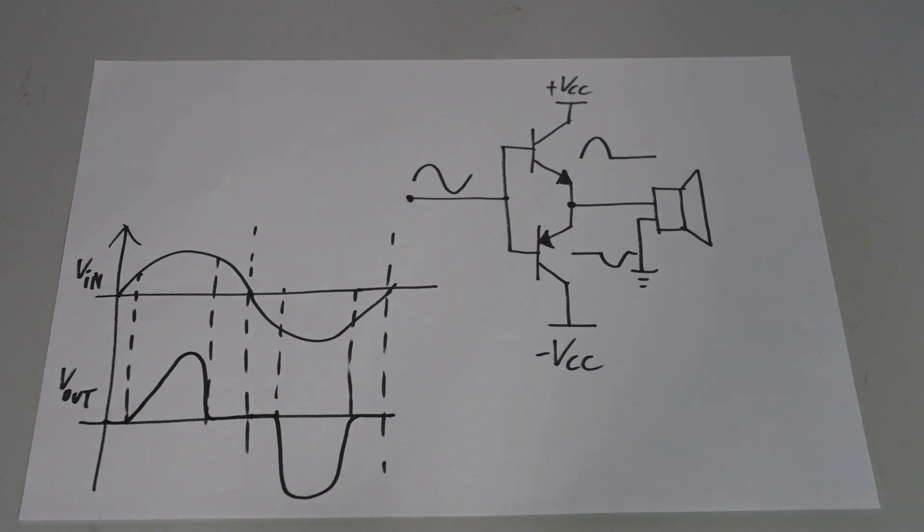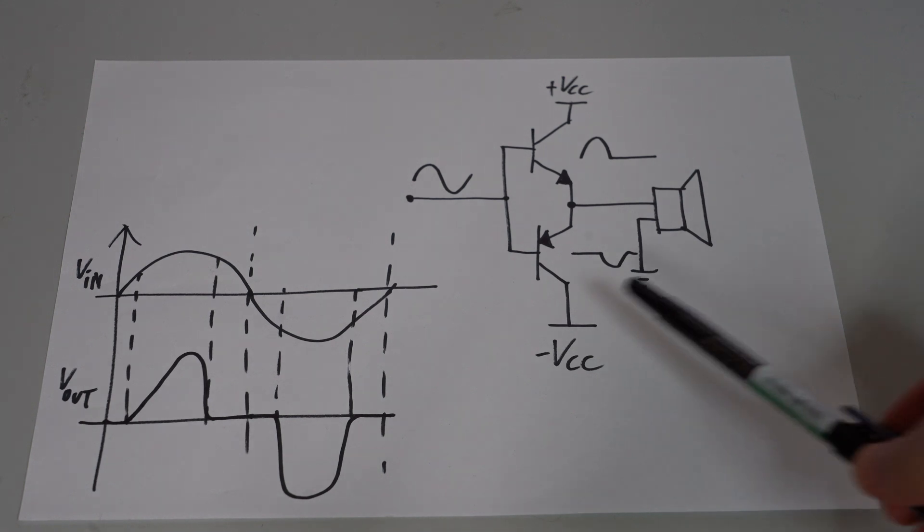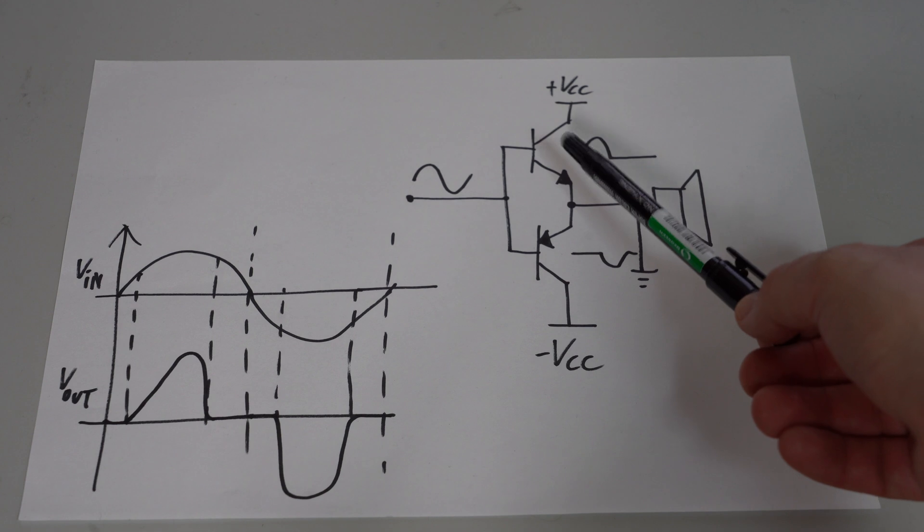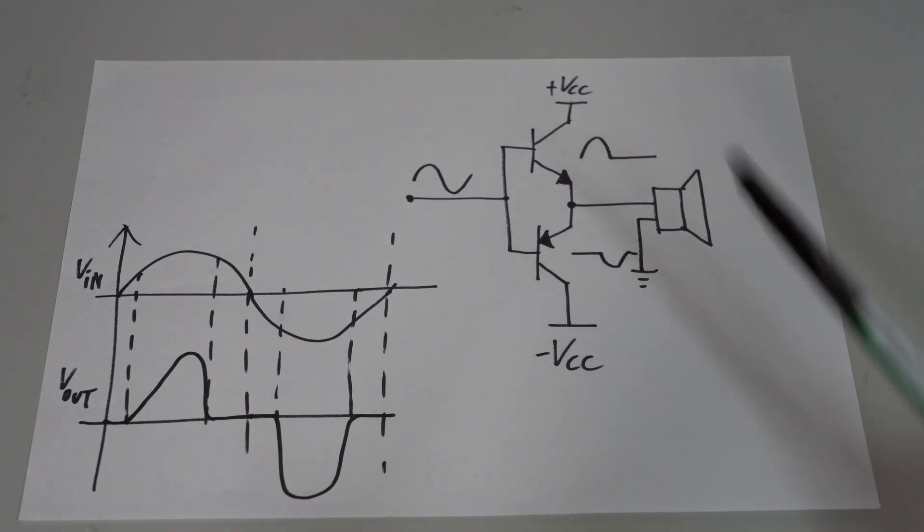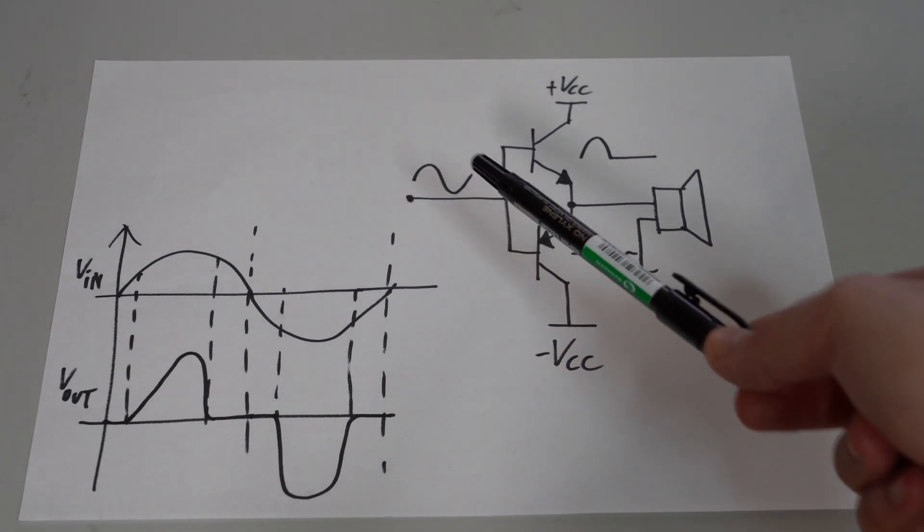In order to understand these adjustments we have to do some theory, unfortunately. So here's what the power stage looks like for a class B amplifier. We have a top transistor right here which is an NPN, a bottom transistor here which is a PNP and let's imagine we have a sine wave at the input.